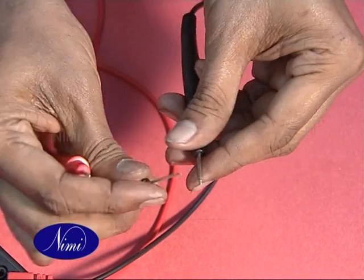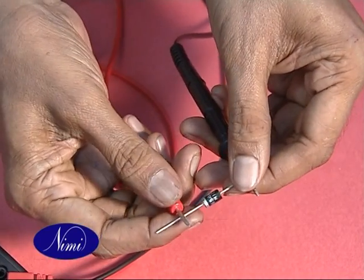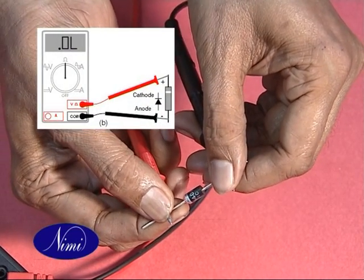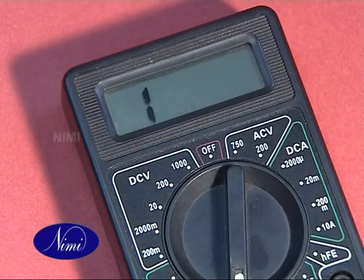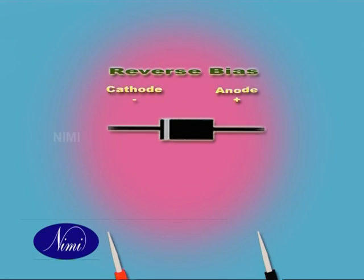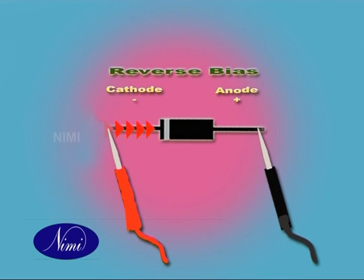Now we change the terminal leads and connect positive probe to cathode and negative probe to anode. No reading in the meter. This is reverse bias. The diode is in good condition.